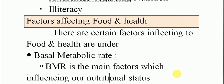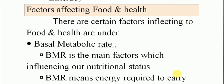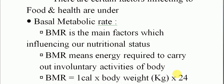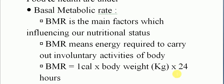There are certain factors affecting food and health. The first of these is Basal Metabolic Rate — BMR. BMR is a main factor which affects our nutritional status. BMR means the energy required to carry out involuntary activities of the body.